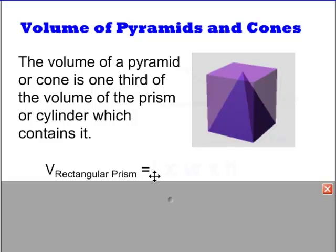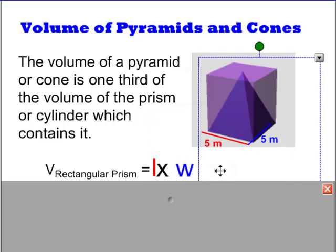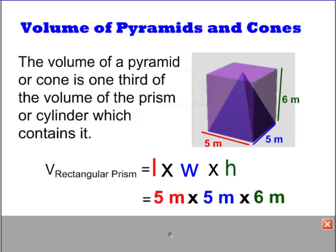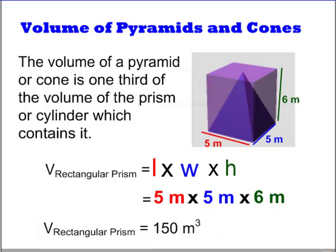We take our formula for the volume of a rectangular or square-based prism. We take the length, multiply that by the width, and then multiply that by the height. We end up with the length of 5 meters times width of 5 meters times the height of 6 meters. We multiply all those numbers together to get the volume of this particular rectangular prism as being 150 meters cubed.